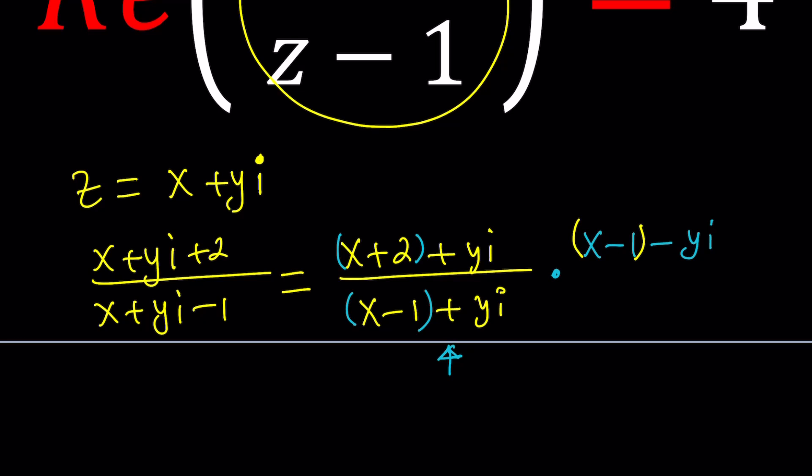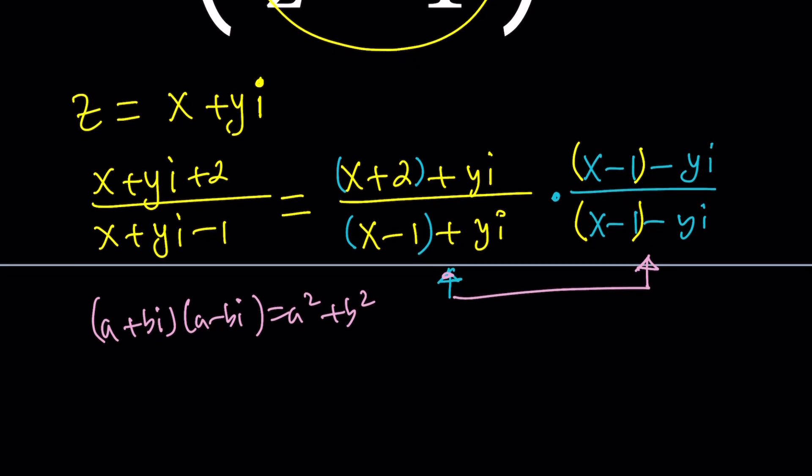You can clearly see the real and imaginary parts here. When you multiply the denominators, you get a sum of two squares. Remember, when we multiply A plus B I and A minus B I, we get A squared plus B squared. It's the difference of two squares with I squared, which is negative 1. That's why it turns into a sum.